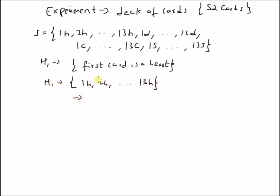So the event H1, that is first card is a heart, it has 13 outcomes, 13 possible outcomes.